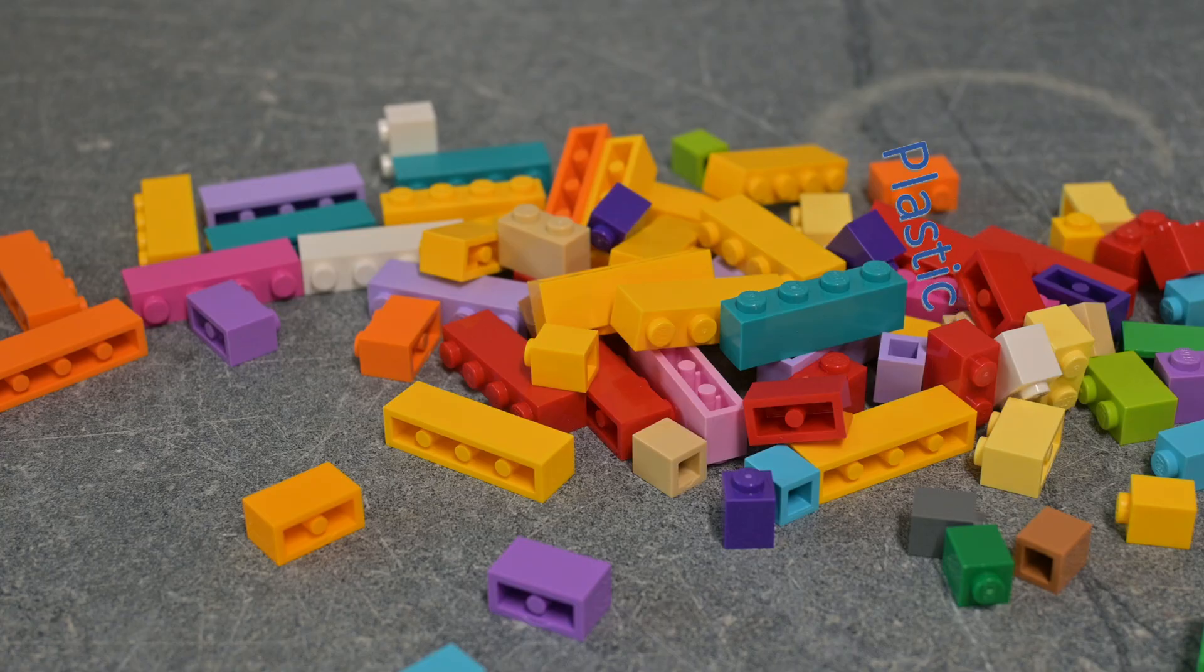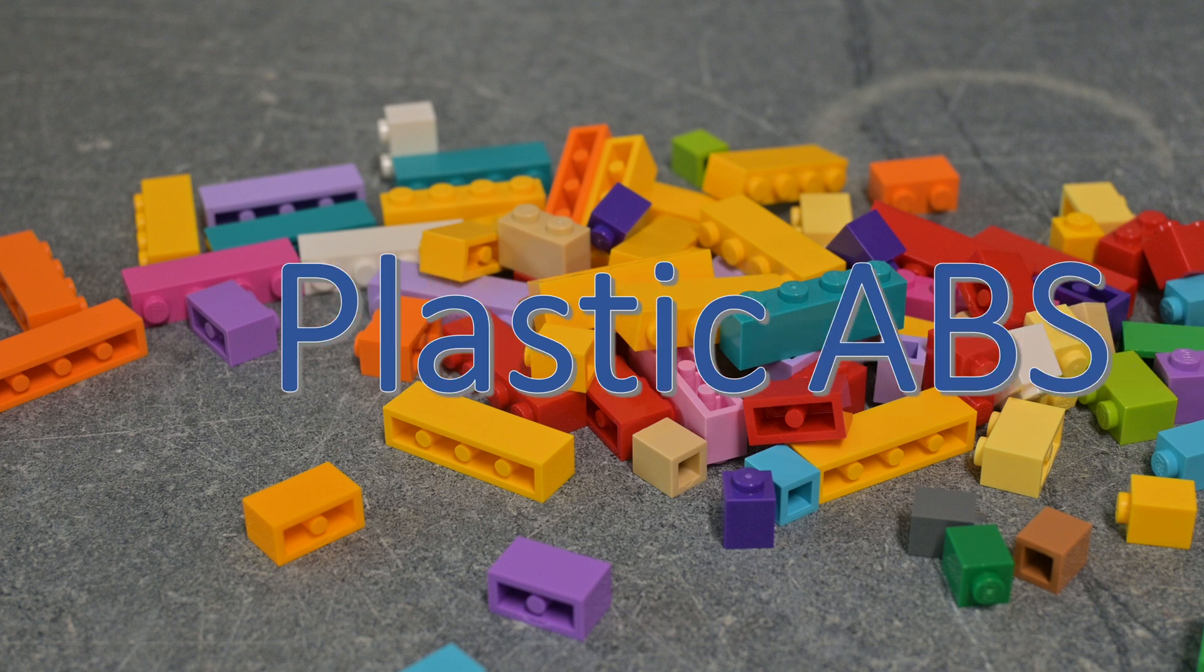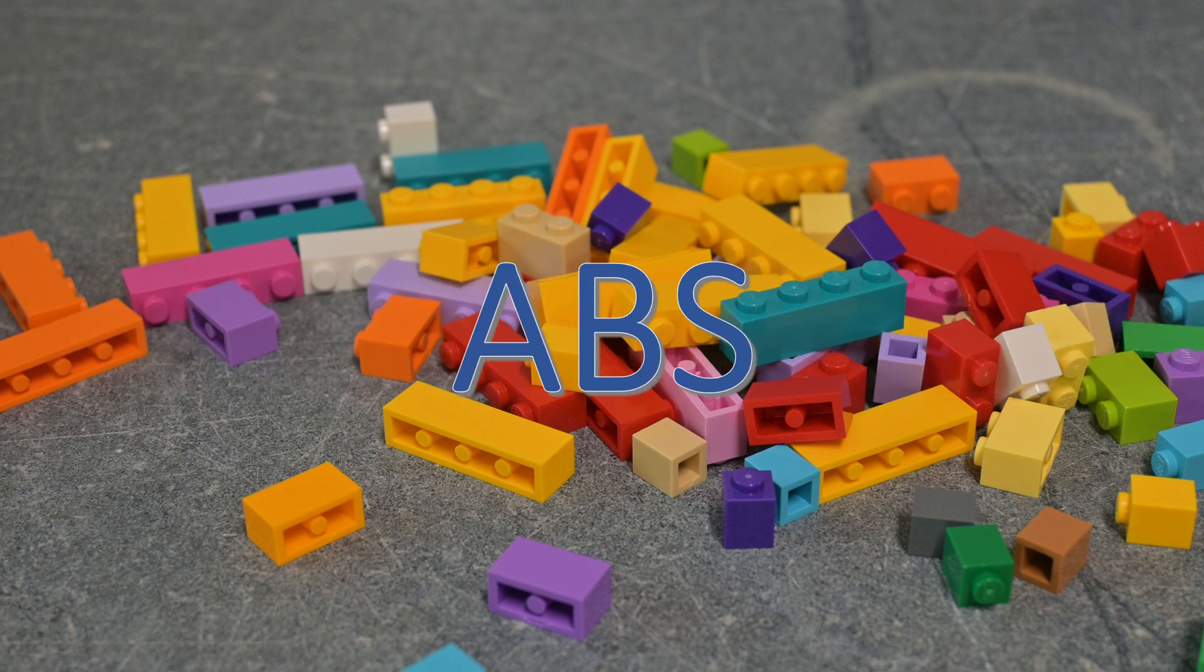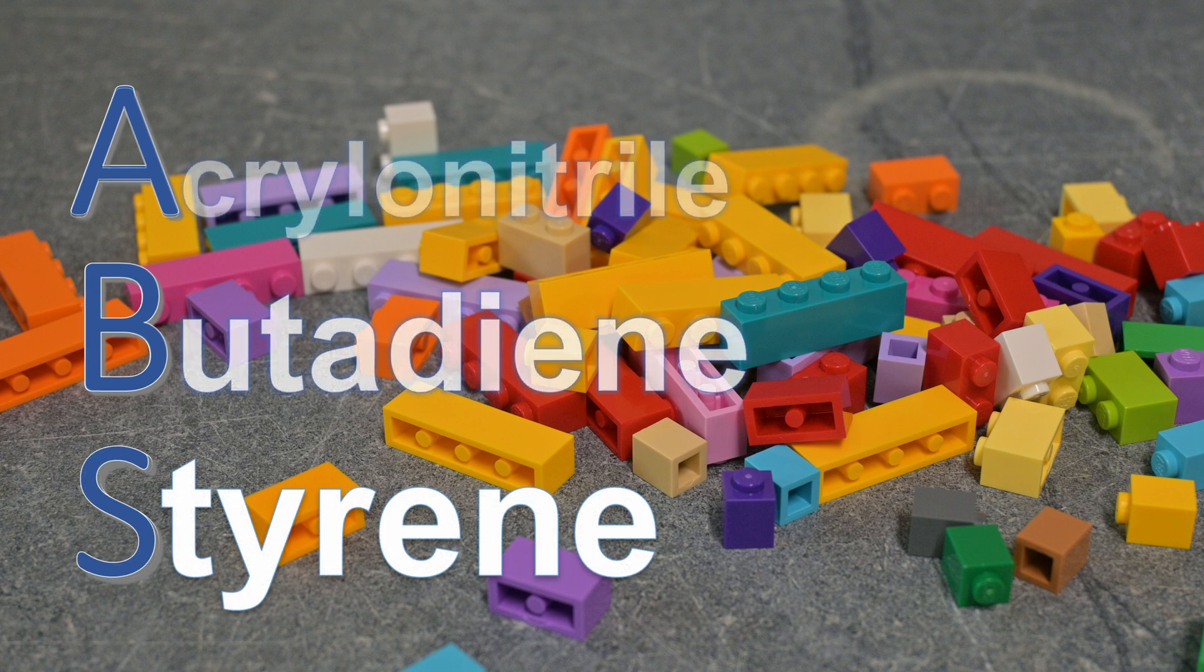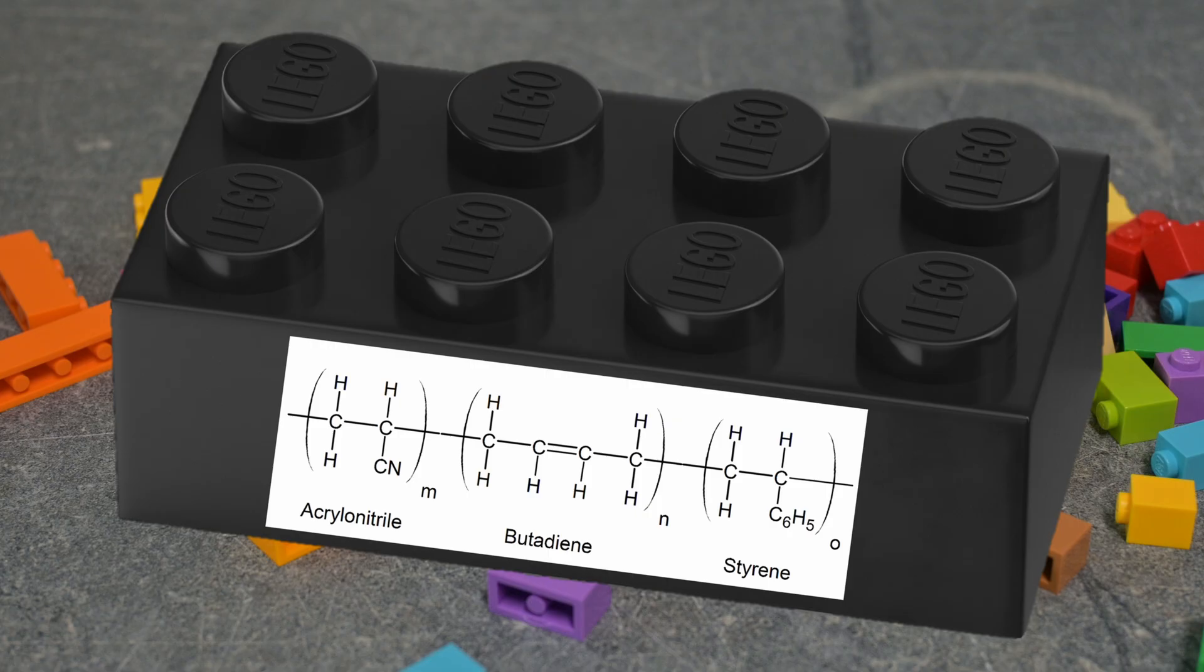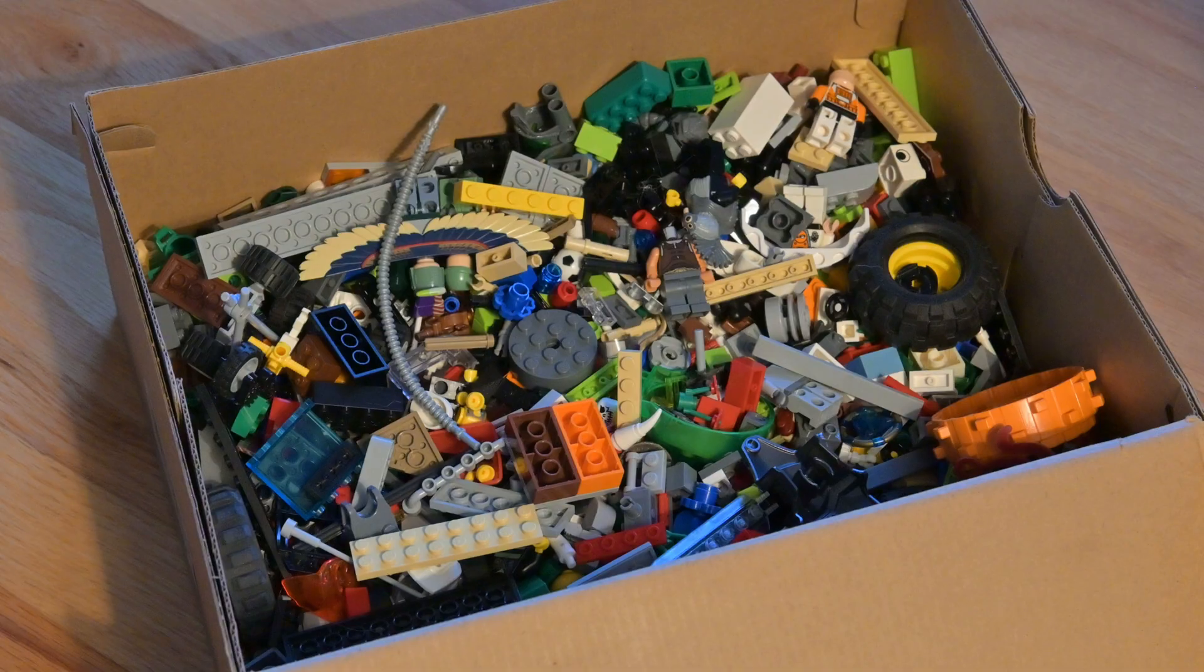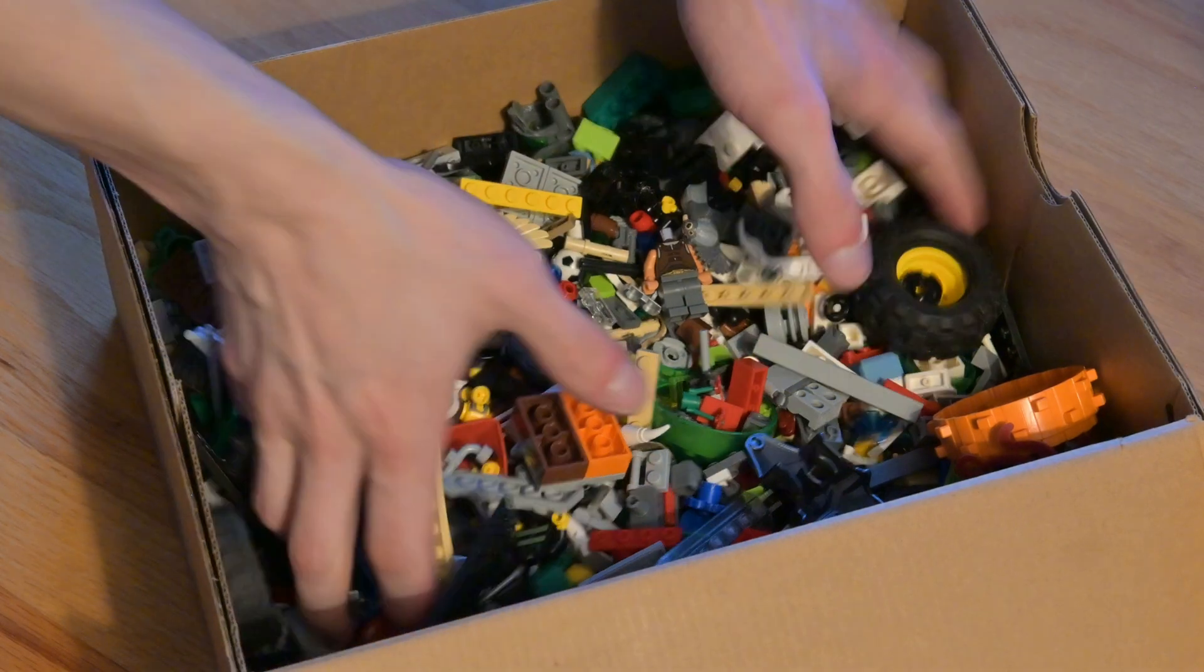Legos are made from plastic, specifically ABS. This is a plastic polymer composed of three distinct monomers: acrylonitrile, butadiene, and styrene. These chemicals combine to create a robust material with excellent resistance, durability, and machining properties. ABS is ideal for manufacturing of precise and colorful Lego bricks.